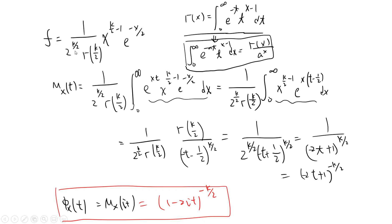The chi-square probability distribution is: 1 over 2^(k/2) times gamma(k/2), times x^(k/2 - 1), times e^(-x/2). The moment generating function is 1 over this expression. These terms can be rearranged — compared to the gamma function formula, if you exchange x with t, then a corresponds to 1/2 minus t.